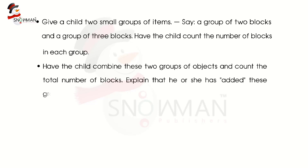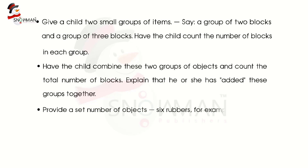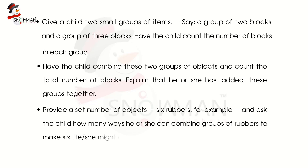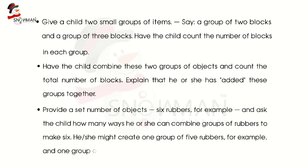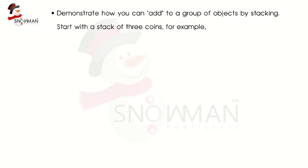Explain that he or she has added these groups together. Provide a set of objects — six rubbers, for example — and ask the child how many ways he or she might create one group of five rubbers and one group of one. Demonstrate how you can add to a group of objects by stacking: start with a stack of three coins, for example, and add two more to the stack.